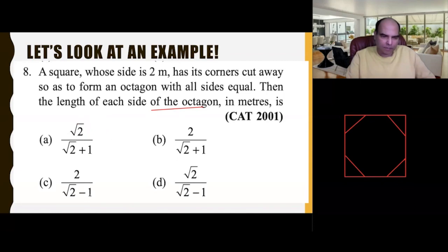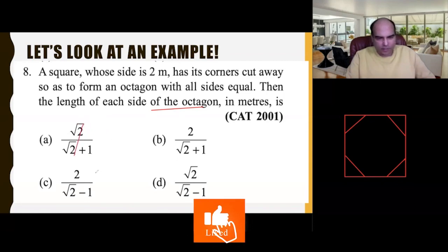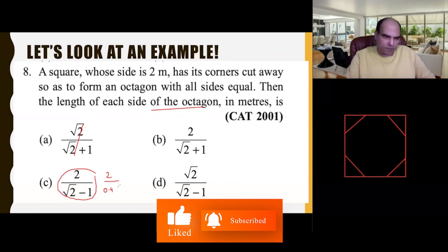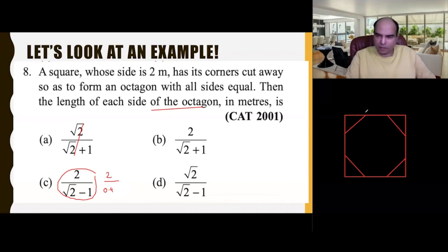This option is even more ridiculous because this is giving me a value of 2 divided by 0.4. If this is the right answer, it's telling me that the side of the octagon has to be around 5. When the whole square has only a side of 2, this is a ridiculous option. On the same logic, option D also gets rejected because this gives me a value of 3.5, which is again greater than the side of the square.